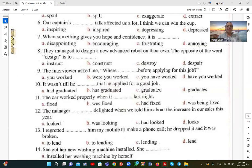Number thirteen: I regretted lending him my mobile to make a phone call; he dropped it and it was broken. 'Regret' can be followed by either 'to + verb' or the gerund, with different meanings. When I say 'I regretted lending him', it means I actually lent the mobile and I regret that action. So C is the correct answer.